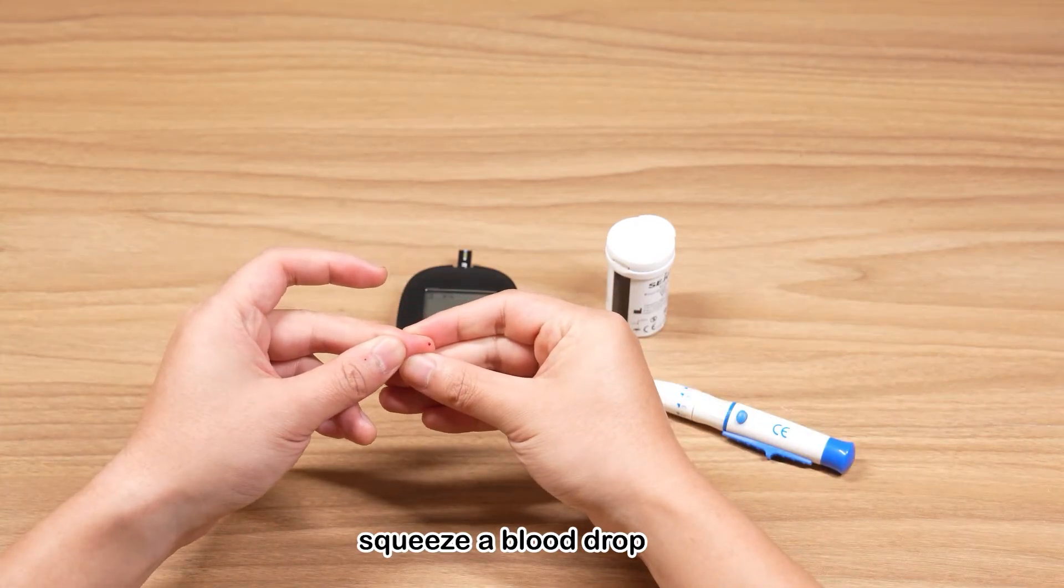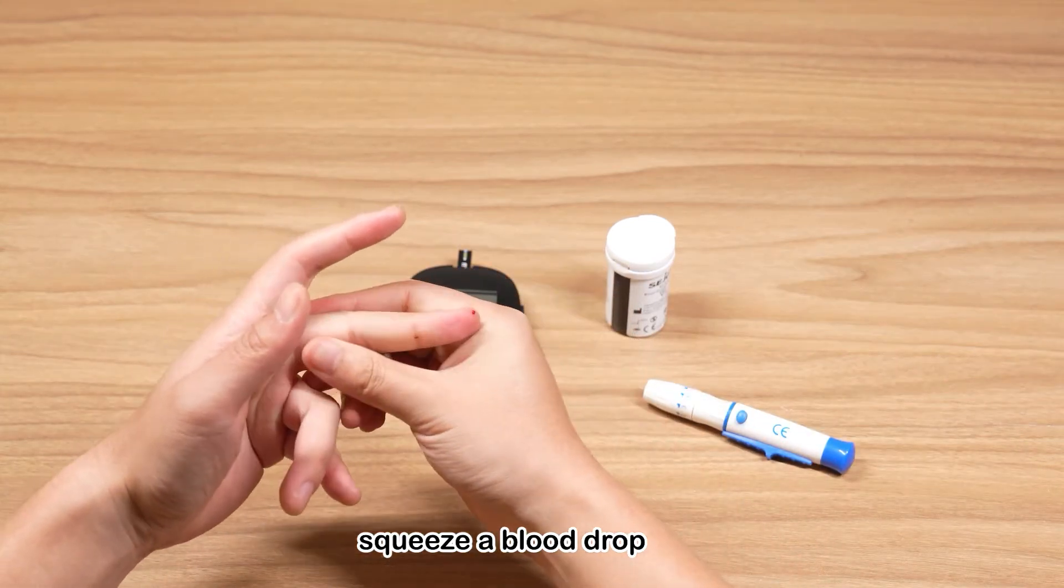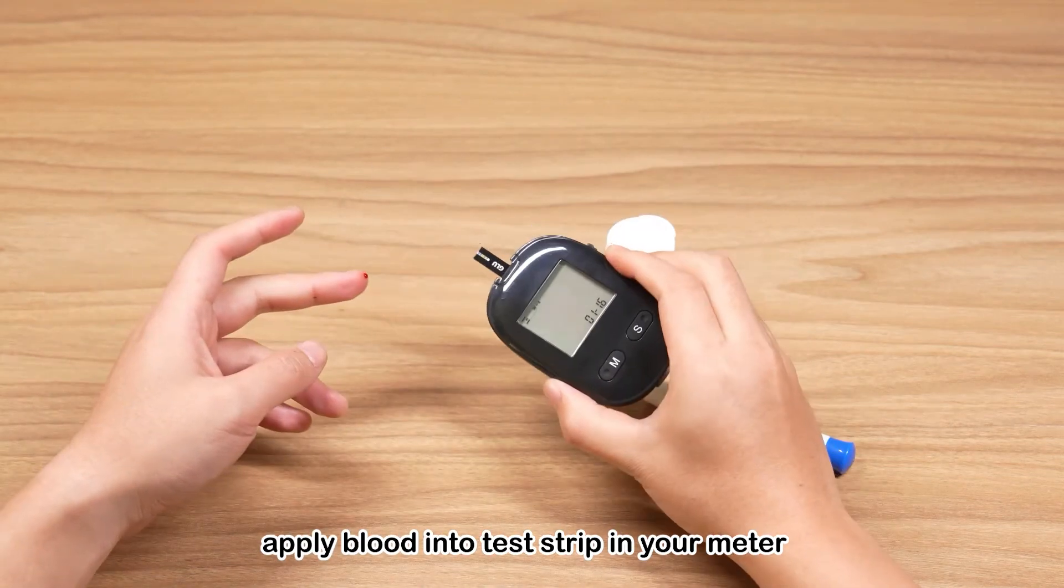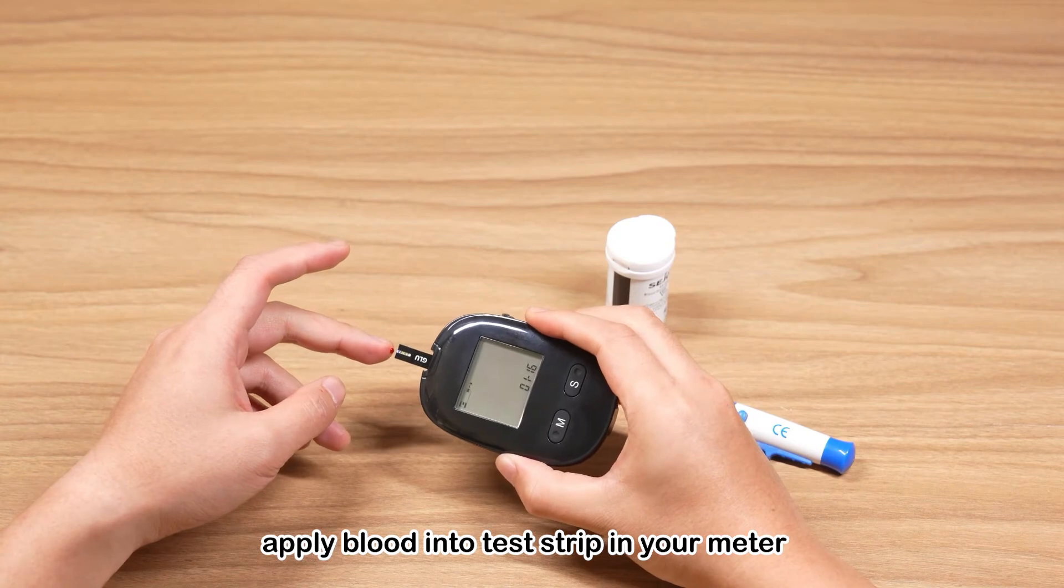Gently squeeze your finger until one small drop of blood is visible. Apply the blood drop into the channel of the test strip until the channel is fully filled.